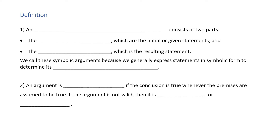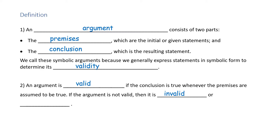Let's begin by getting some definitions. An argument consists of two parts: the premises, which are the initial or given statements, and the conclusion, which is the resulting statement. We call these symbolic arguments because we generally express statements in symbolic form to determine its validity. An argument is valid if the conclusion is true whenever the premises are assumed to be true. If the argument is not valid, then it is invalid or fallacious.